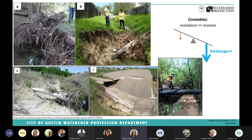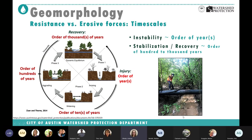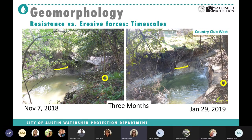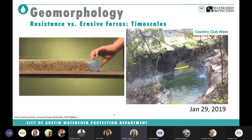Here are more examples of our problems: incision from too much discharge and not enough bank resistance, and classic head cuts. Many of our responses are fairly acute — they happen quickly — and if we let it naturally restabilize, it can take thousands of years. What we often do is catalyze recovery, either changing the hydrology or stabilizing and helping that process. Here's an example showing how fast this can change — in just a few months we watched a head cut go through an old grade control in Country Club West.